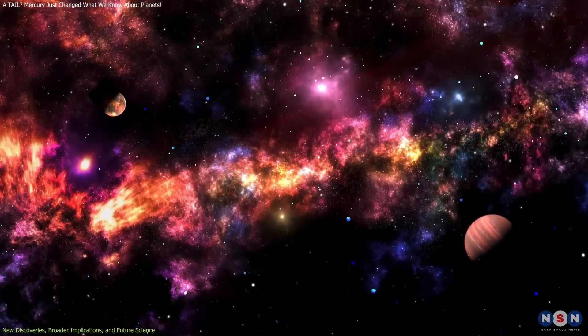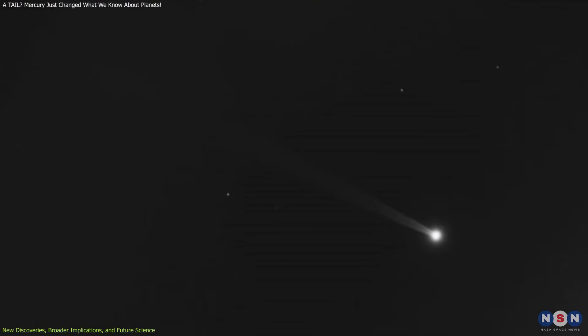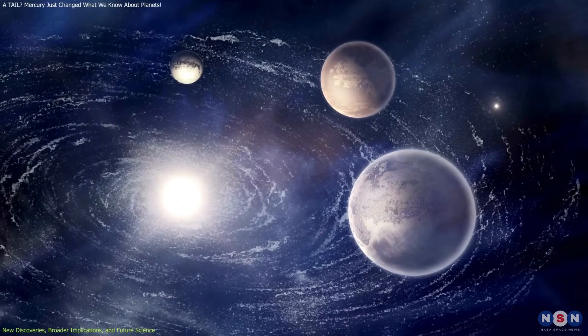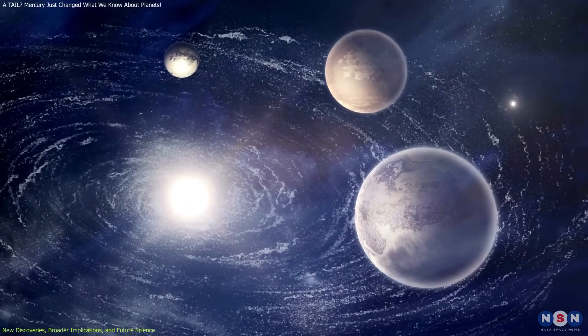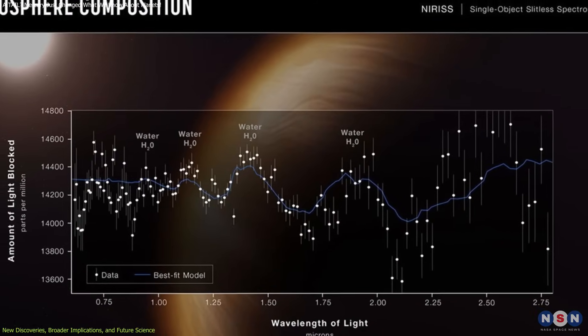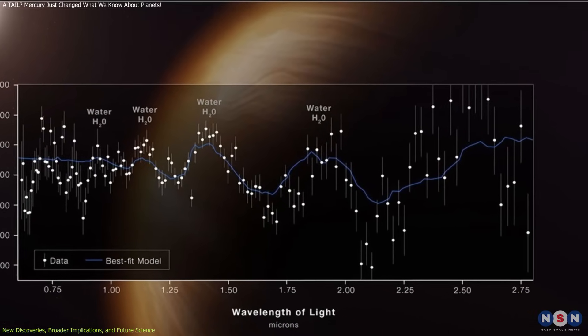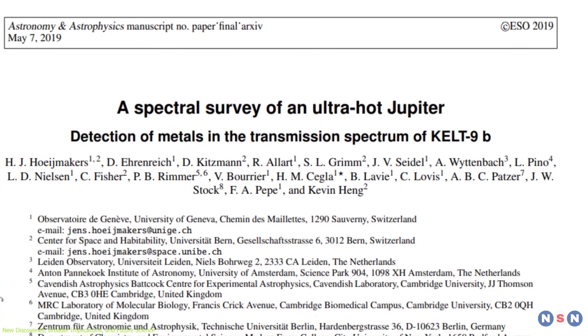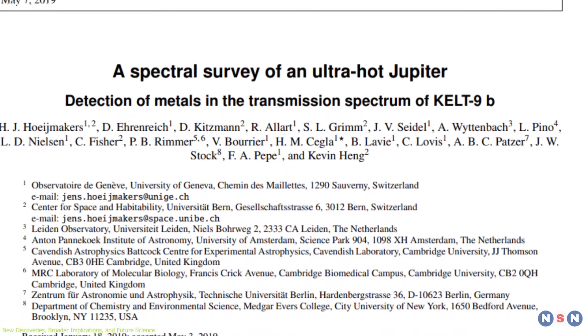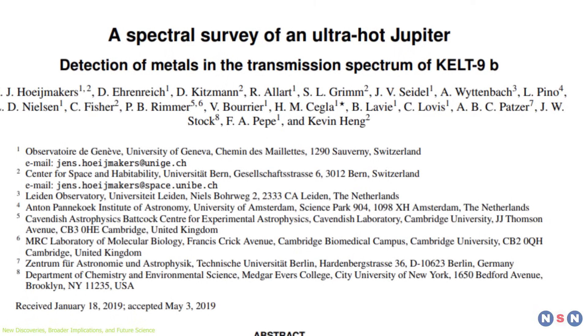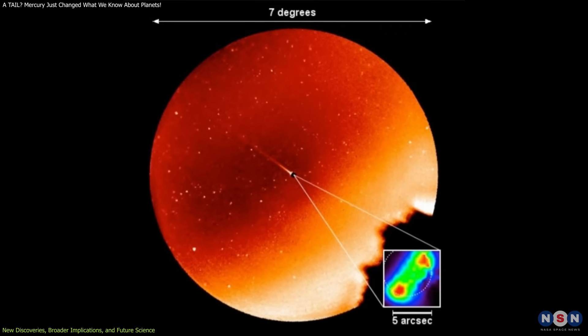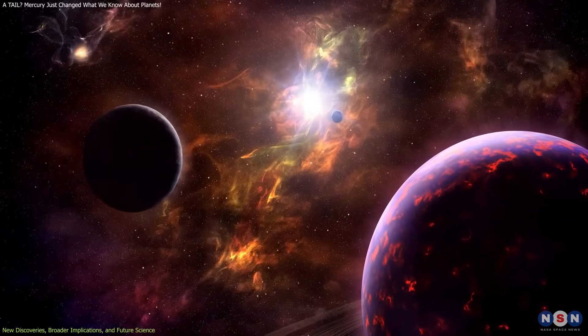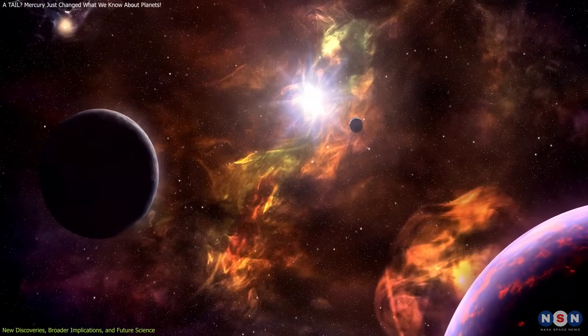This research has exciting implications for exoplanet science. Just as we study sodium tails around Mercury, scientists have begun detecting similar signals in the atmospheres of exoplanets orbiting close to their stars. In 2018, sodium was detected in the atmosphere of WASP-96b, a hot Jupiter exoplanet. More recently, sodium has been used as a key tracer in the atmospheric studies of ultra-hot planets like KELT-9b. Mercury's sodium tail offers the physics toolkit needed to interpret these findings accurately. It's not just a curiosity, it's a calibration tool for interstellar exploration.